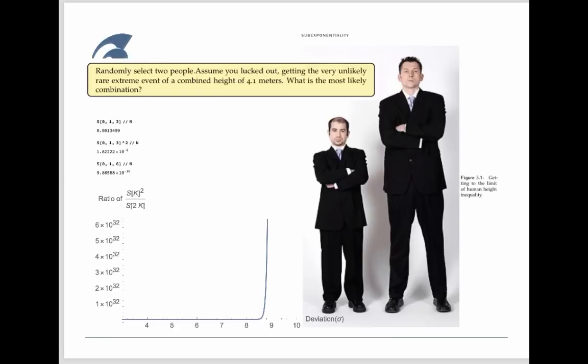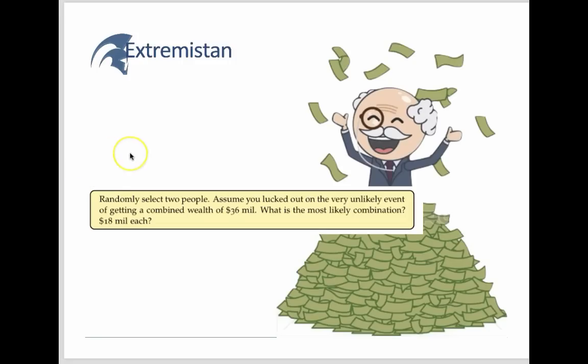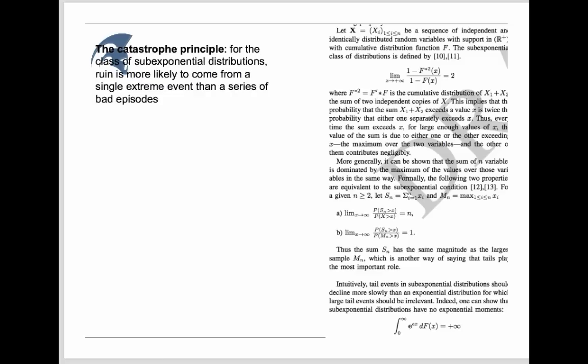Now let's compare to Extremistan, and let's say we play the same sort of experiment, and you select two people and they have a total net worth of 36 million. It's rare, considering that you have 7 billion people on the planet, most of whom have no money. What's the most likely combination? Is it 18 million and 18 million? No. So that's the difference between the two domains. The most likely combination here is going to be 35.999 million and 0.001, or something of that order. So the difference between the two domains will allow us to analyze and view the world.